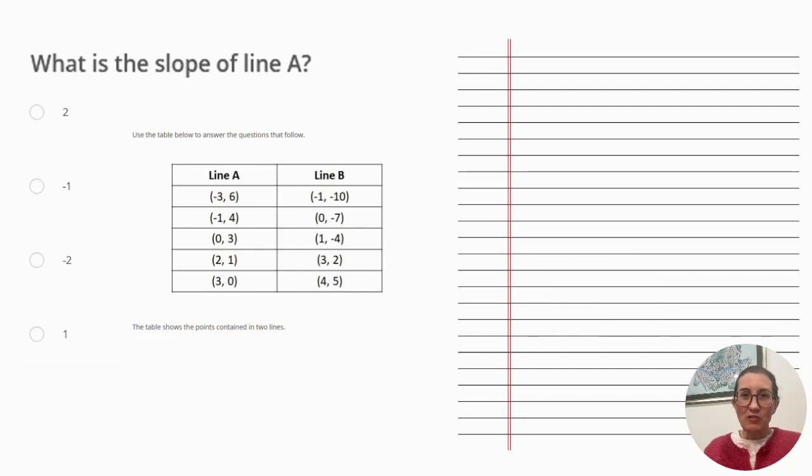For the last question, we are provided two line datasets. We are asked to provide the slope of line A only. To determine the slope of the line,